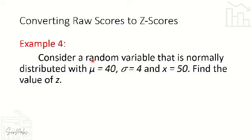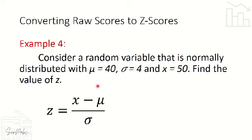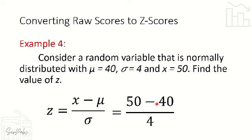Example number 4: consider a random variable that is normally distributed with a mean of 40, standard deviation of 4, and a score of 50. Find the value of Z. Given: mean is 40, standard deviation is 4, and X is 50. We replace our variables with the given values: Z = (50 − 40) / 4, which equals 2.5.